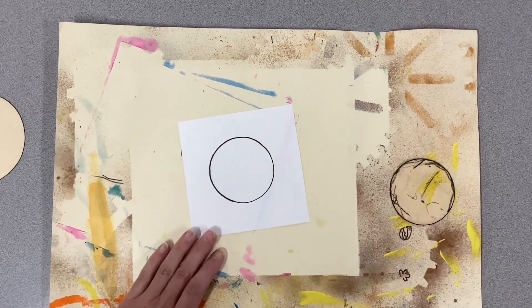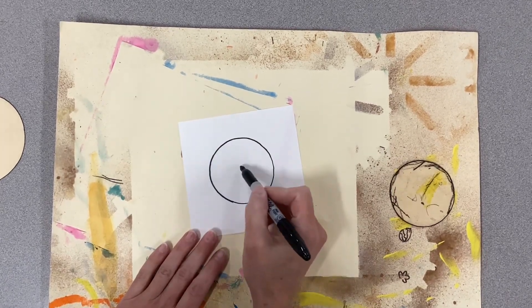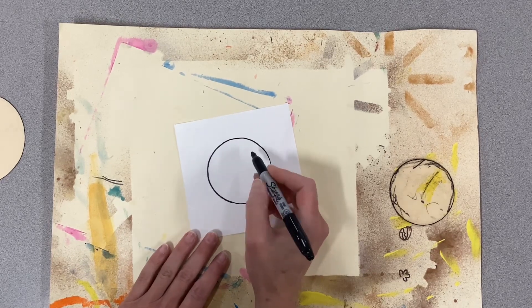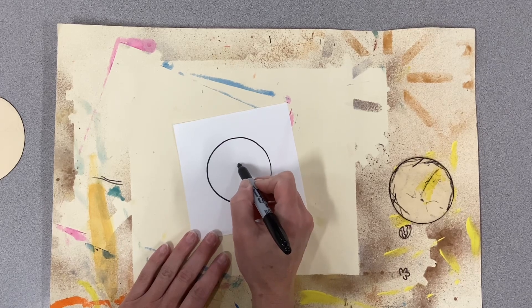Then you can decide what kind of donut do you want. Do you want one with the hole in the center, or just a donut with frosting at the top? I think I'm going to go with the hole in the center.